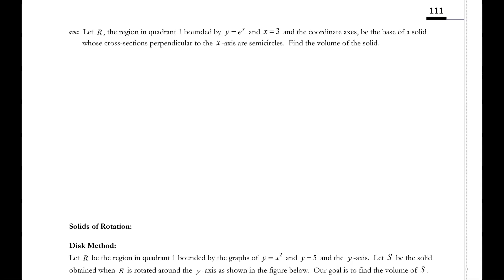We are looking at this next example at the top of page 111. Let R, the region in quadrant 1, bounded by y equals e to the x and x equals 3, and the coordinate axes be the base of a solid whose cross sections perpendicular to the x-axis are semicircles. Find the volume.